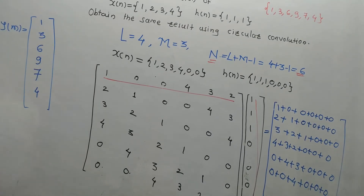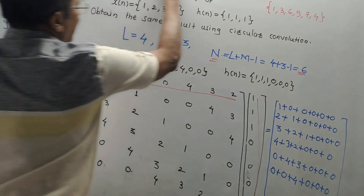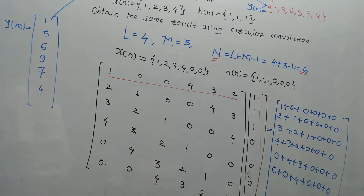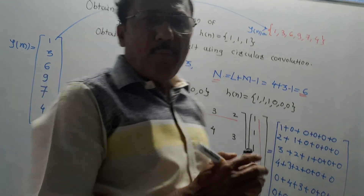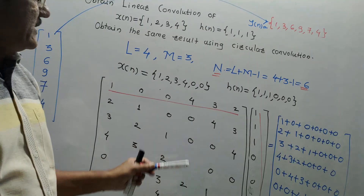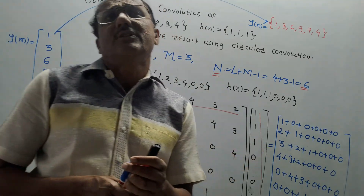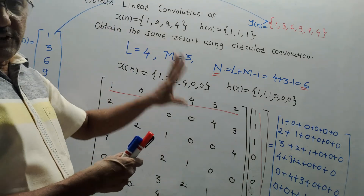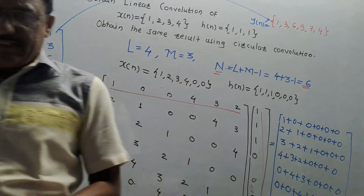The answer of circular convolution is {1, 3, 6, 9, 7, 4}, which is the same as the answer we obtained earlier using linear convolution. This is the technique for how you can perform linear convolution using circular convolution — a very simplified technique. Dear students, if you haven't watched the earlier videos on circular convolution, do watch them; I will provide the link in the description box. Thanks for watching. Thank you very much. Bye.